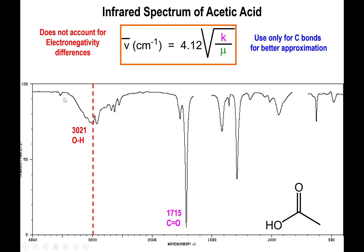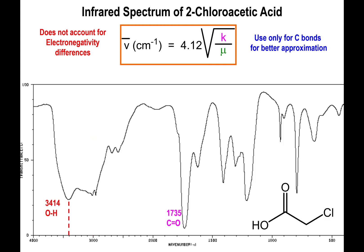Because you have an OH functionality present in your carboxylic acid, you have that peak above 3000, and it is kind of broad. Generally speaking, carboxylic acids have very broad OH peaks in the IR spectrum.